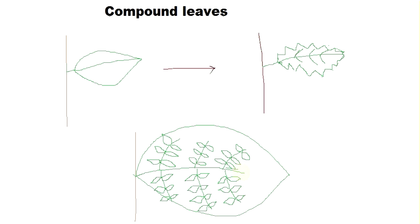The whole structure including all the leaflets is a single leaf. Don't say these are leaves — leaves are never so small. These are leaflets, small cut-out portions of a leaf. The whole thing including all these leaflets is a single leaf. There is a midrib, there are veins, and these are small cut-out portions of the whole leaf.